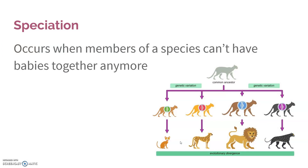Speciation is what we call it when a new species is created. To be a species, you have to be able to reproduce and make babies that can also reproduce. If you can reproduce but your offspring is infertile — such as in the case of mules — it's not a true species. Speciation occurs when members of a species can no longer reproduce with each other; their ancestors could, but they can't, so they are separate species. They have diverged.